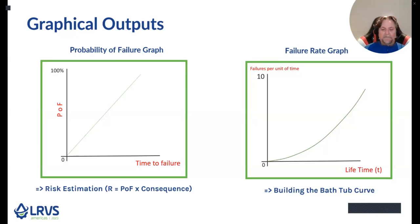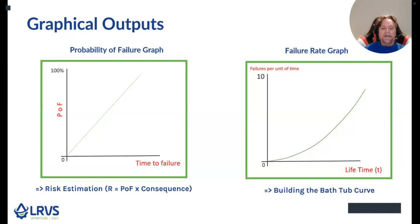The failure rate is expressed in failures per unit of time — failures per year, failures per month, etc. Typically, failure rate curves increase over the lifetime of an asset. For example, if you own a vehicle, the frequency of failures will increase over time as the vehicle ages; failures will occur more and more frequently. So a failure rate curve for your car will show an increase over time, just like the curve on the right. However, this is not always the case — we don't always have increasing failure rate curves, as we will see when we start talking about the bathtub curve in the next slide.